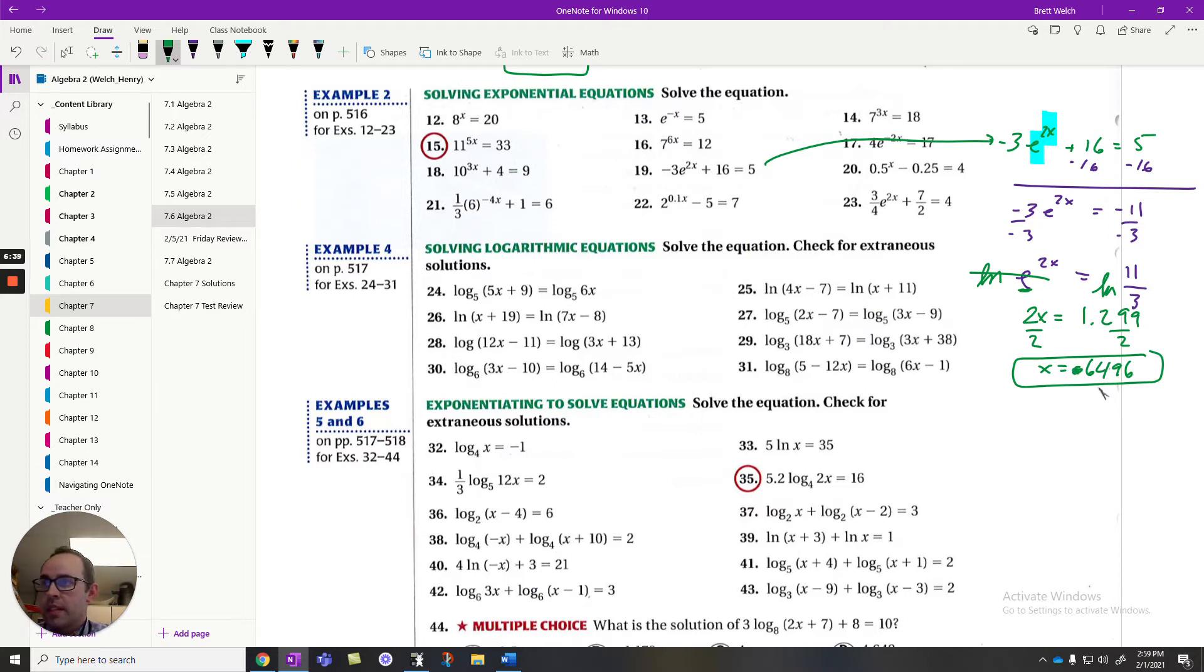What happens when it's not e? What happens when it's some other base? It doesn't really matter, the problem doesn't really change. Let's take a look at number 16. Is the base with its exponent alone? The answer is yes. So then I can apply a log to both sides, but I need the log to cancel my exponential. And since it's base 7, I'll use base 7. So the log base 7 will cancel the 7, giving me 6x.